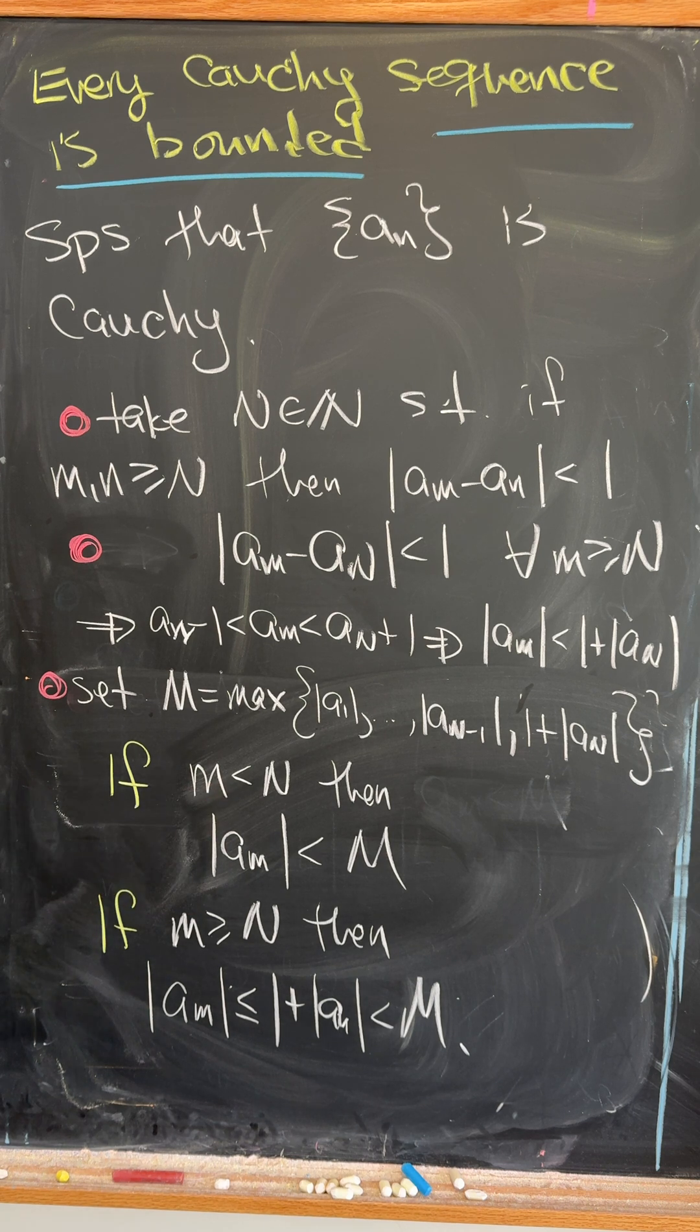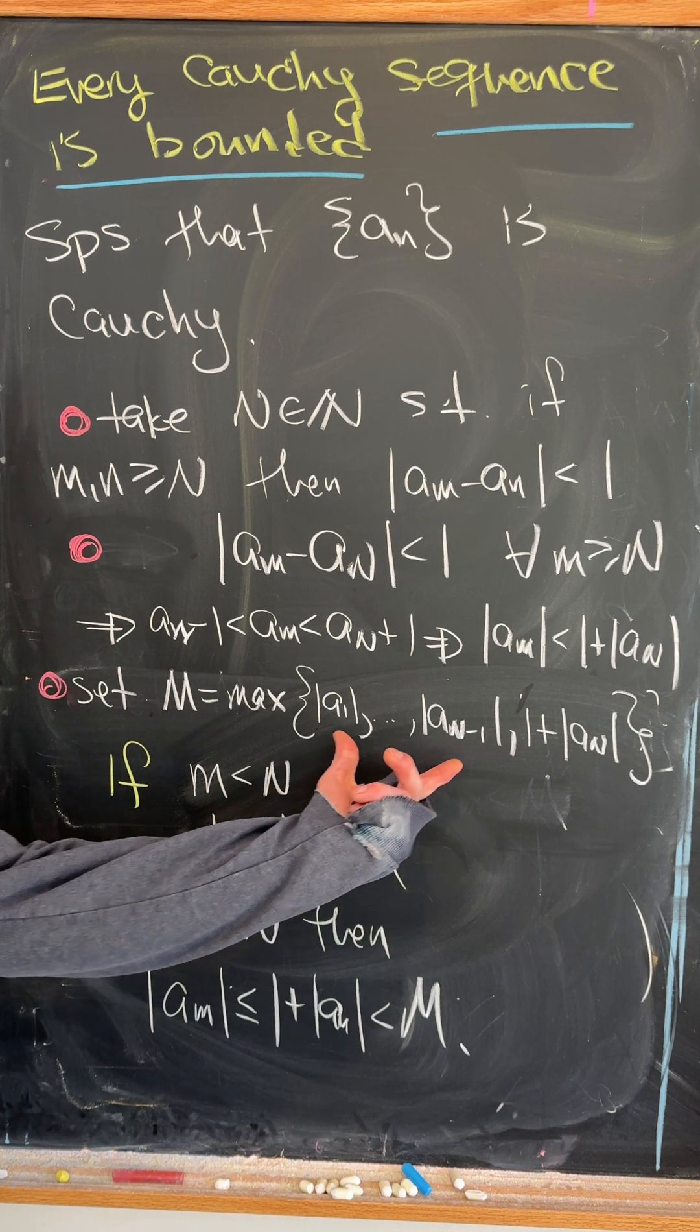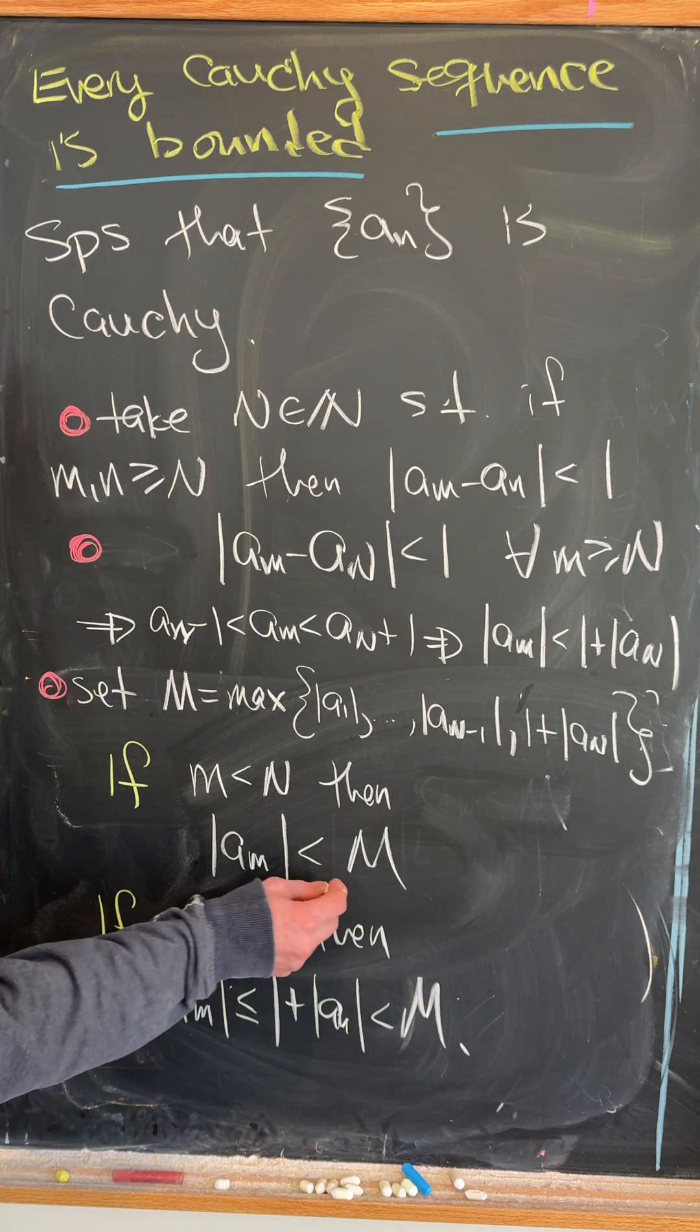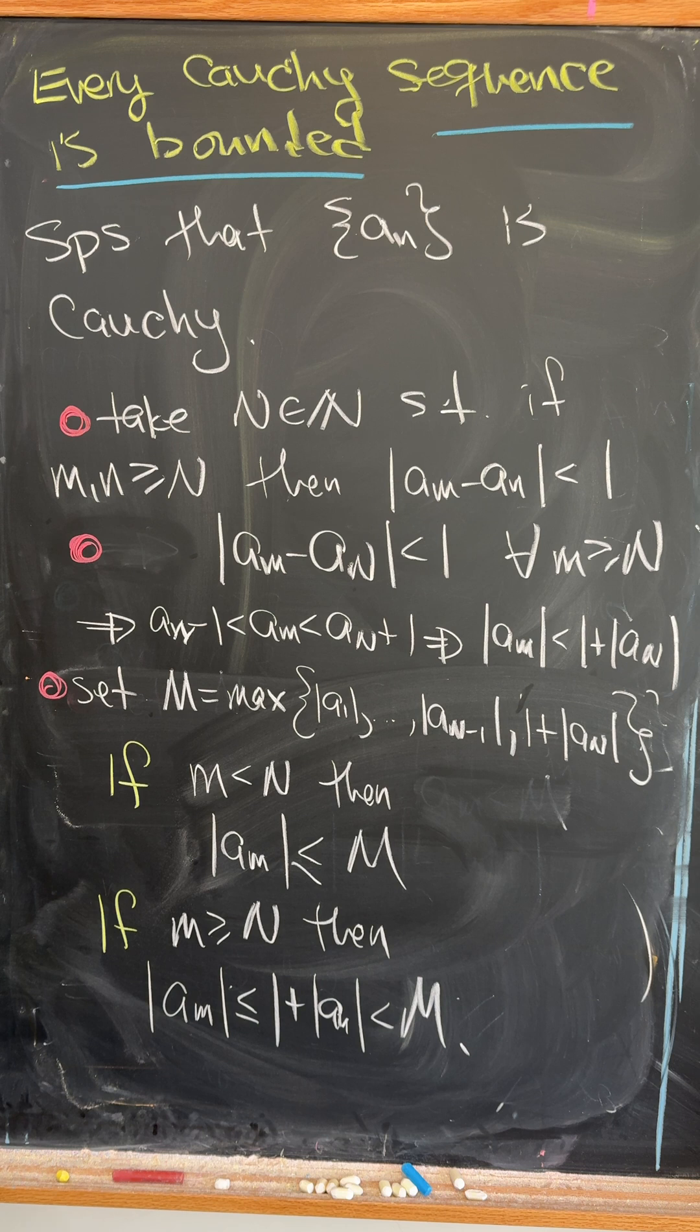Now if m is less than n, then the absolute value of a_m is on this list but that's less than or equal to the max. But then if m is bigger than or equal to n, by what we showed up here we have an inequality as well.